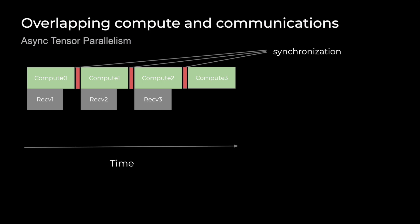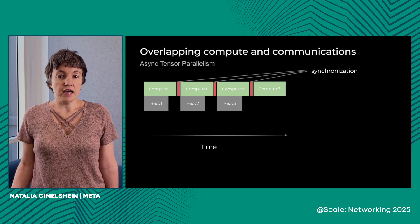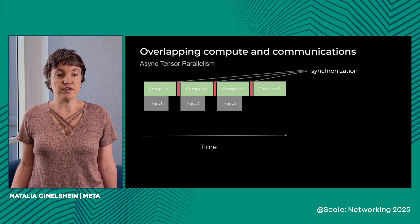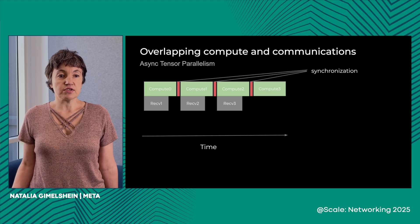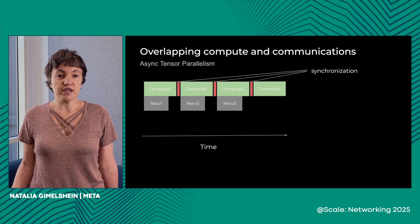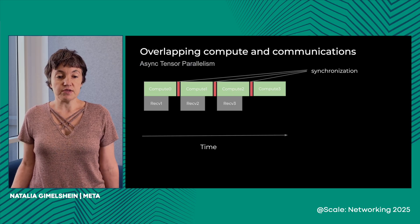We can split our computation further so that each GPU, instead of performing one large matmul, performs smaller matmuls. In parallel with those matmuls, we are also sending the data that will be needed for the next step. This can be implemented without symmetric memory — and in fact, it was previously implemented without symmetric memory. However, there are problems when implementing this pattern with NCCL without symmetric memory. NCCL uses SM resources to send and receive data, and those SM resources would be unavailable for performing matrix multiplication, slowing it down.